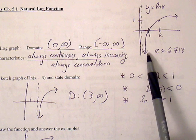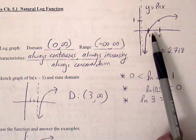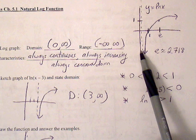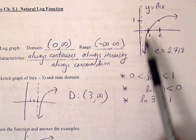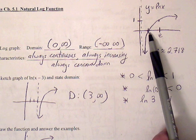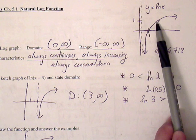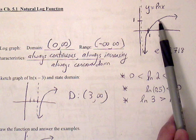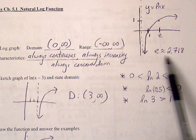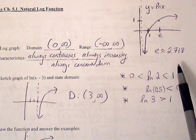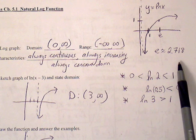First off, the natural log function has a vertical asymptote at x equals 0. It crosses the x-axis at 1, and it passes through the ordered pair E, 1. So E is a rational number, which is roughly around 2.718.